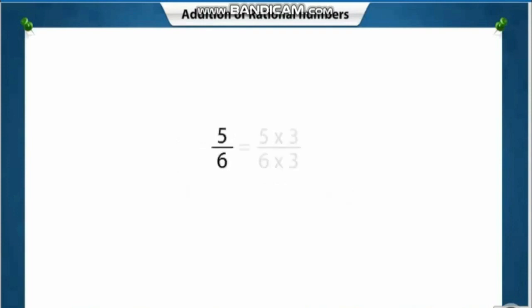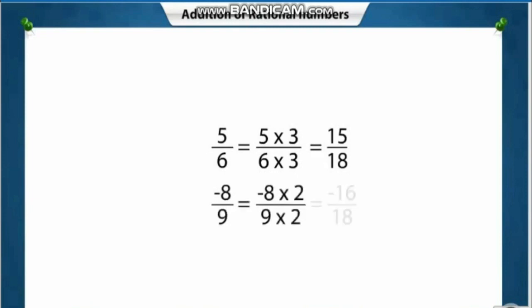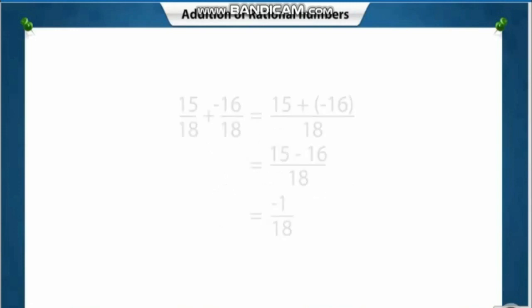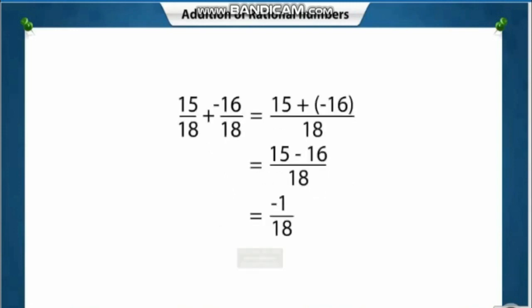The next step is to multiply the numerator and denominator of both fractions to get 18 as the denominator. Now both rational numbers have the same denominator, making it a like fraction. Adding the two numerators, we get minus 1 by 18.